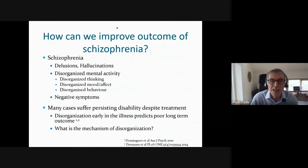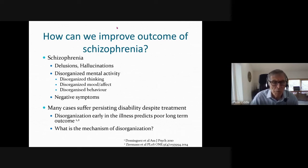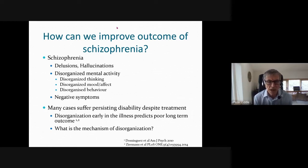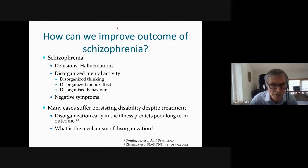One of the big clinical questions we face in serious mental illness is improving the outcome of schizophrenia. Schizophrenia has a variety of symptoms — probably the best known are delusions and hallucinations, which are distortions of reality. In severe schizophrenia there is also a serious problem with disorganization of mental activity: disorganization of thinking, mood, and behavior. Disorganized thinking leads to disconnected speech. There are also so-called negative symptoms.